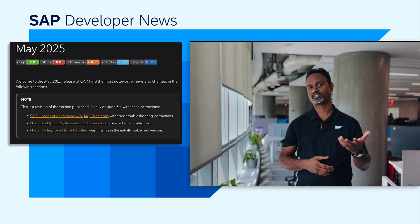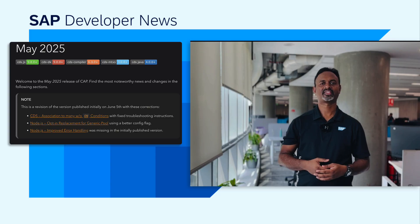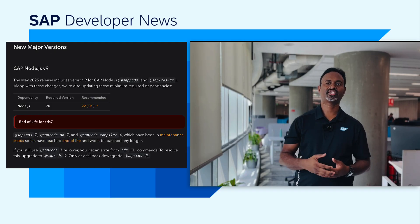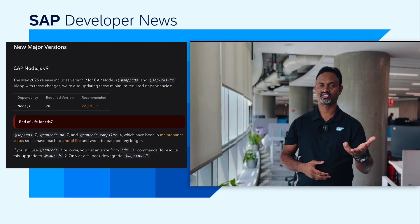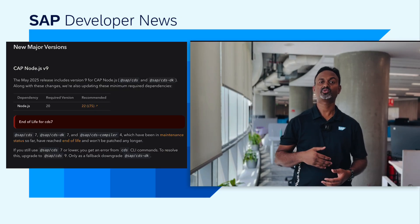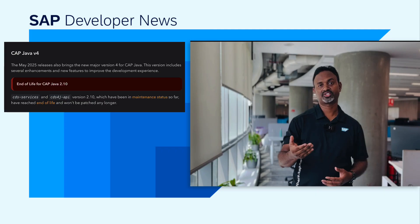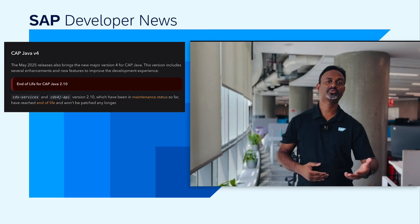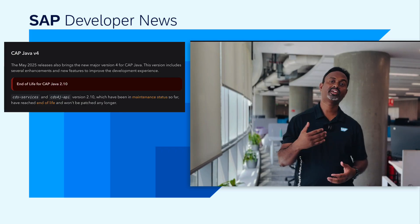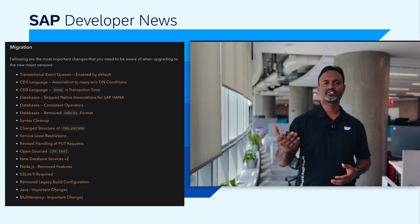The CAP Major release for May 2025 is now available. We have updates for the new major versions. This includes version 9 for CAP Node.js with changes in the minimum required Node.js version to 20. With this release, CDS7 has reached end of life and won't be patched any longer. This release brings new major version 4 for Java, including several enhancements and new features to improve the development experience. CAP Java 2.1.0 has also reached end of life and requires you to upgrade to a newer release. Next up, we have information on the most important changes that CAP developers need to be aware of while upgrading to the major version.